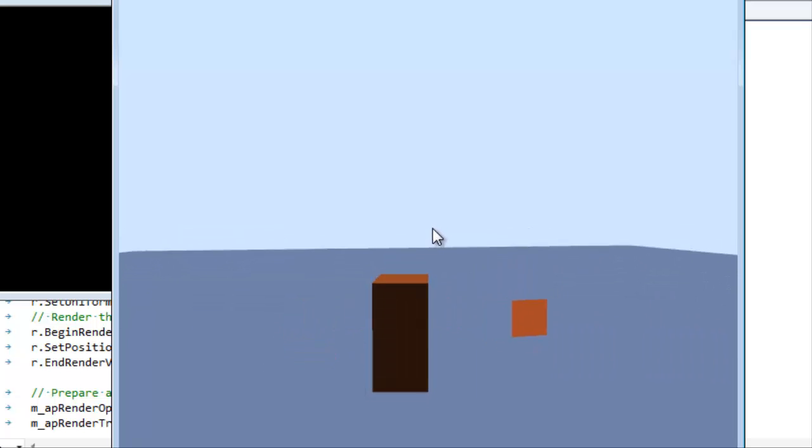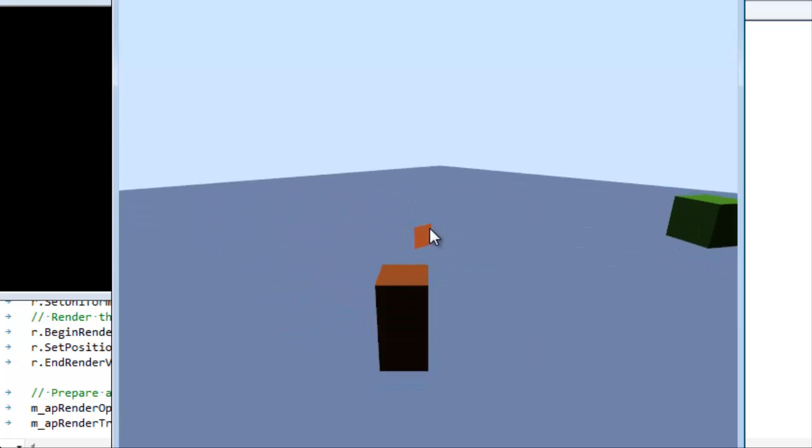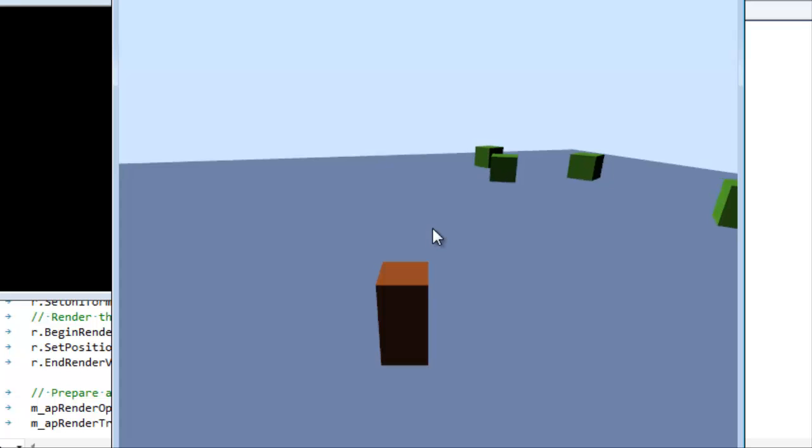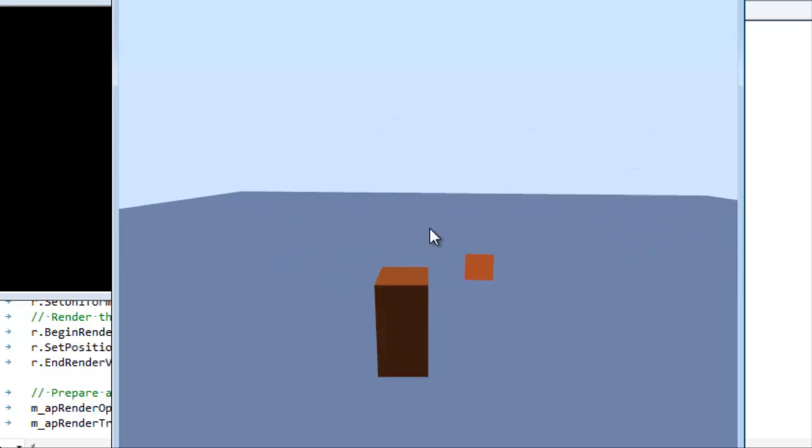Let's run it. Here it is, here's our little square. This square is just two triangles that we specified. Notice that if I go around behind it it disappears - that's because of the winding. I'm using OpenGL so my winding is counterclockwise. DirectX the winding is clockwise but again it really doesn't matter as long as you are consistent.